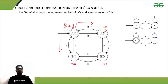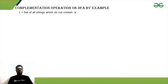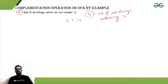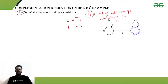That's all for cross product. Now let's look at complementation. For the complementation operation, we have a language L which is the set of all strings that do not contain a. We can define another language L1 as the set of all strings containing a. Then L1 is the complementation of L, and equivalently L is the complementation of L1.